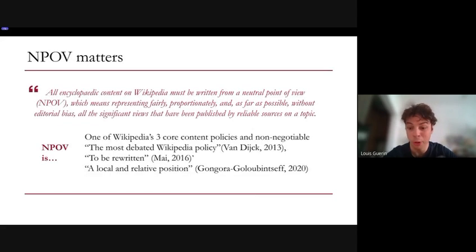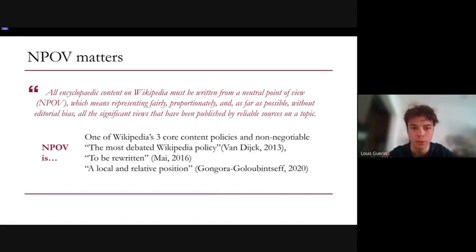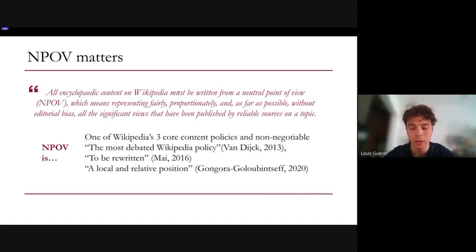Our motivation for this research stems from the increasing prevalence of misinformation and disinformation online. Wikipedia, as a major information source, is not immune to these issues, and our goal was to develop a tool that can assess the neutrality impact of individual edits to help maintain Wikipedia's credibility.